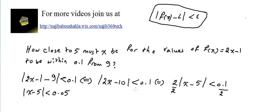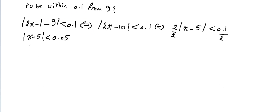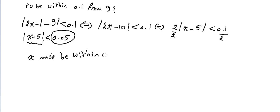So what do we conclude? The question asked how close to 5 must x be for the values of f(x) to be within 0.1 from 9. Our conclusion is: x must be within 0.05 — which is delta — from 5, for f(x) to be within 0.1 from 9.